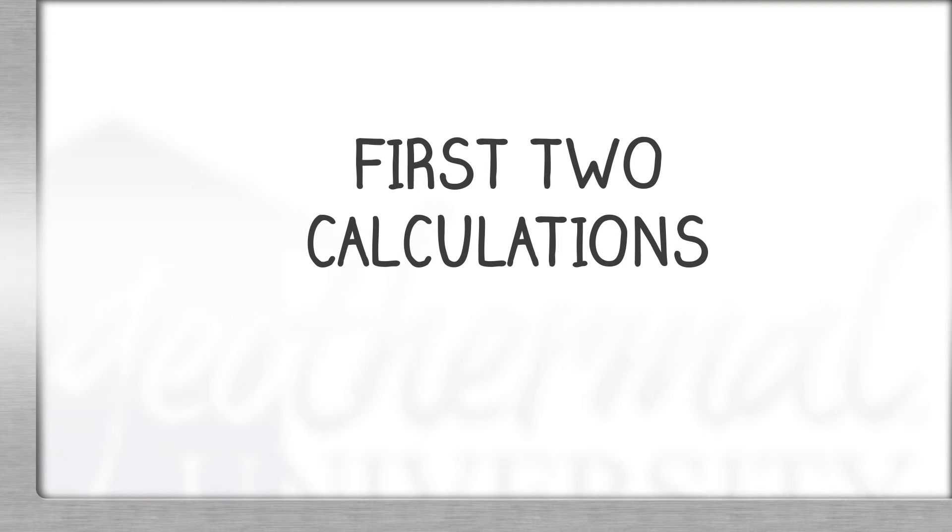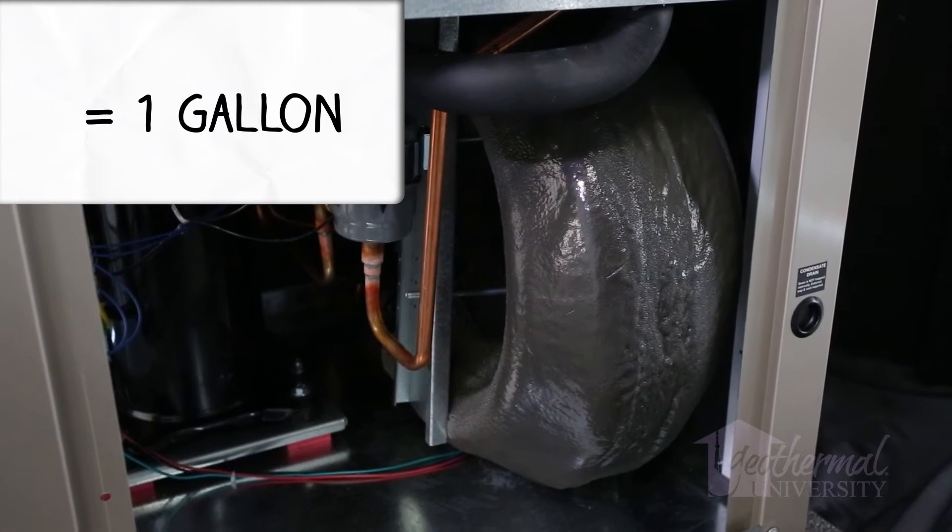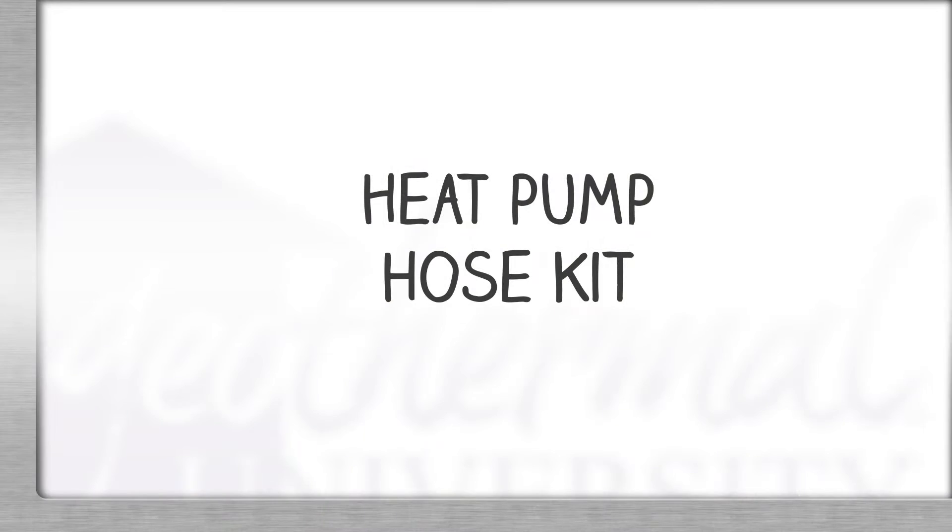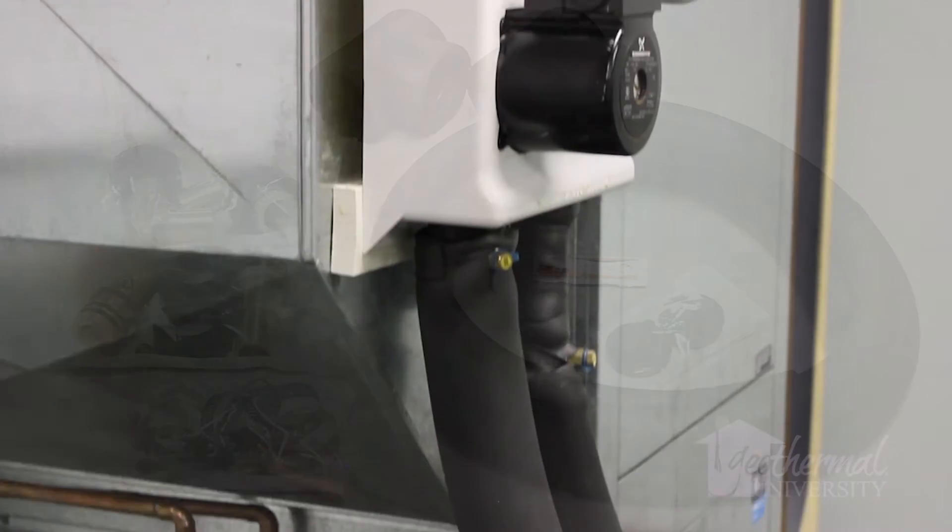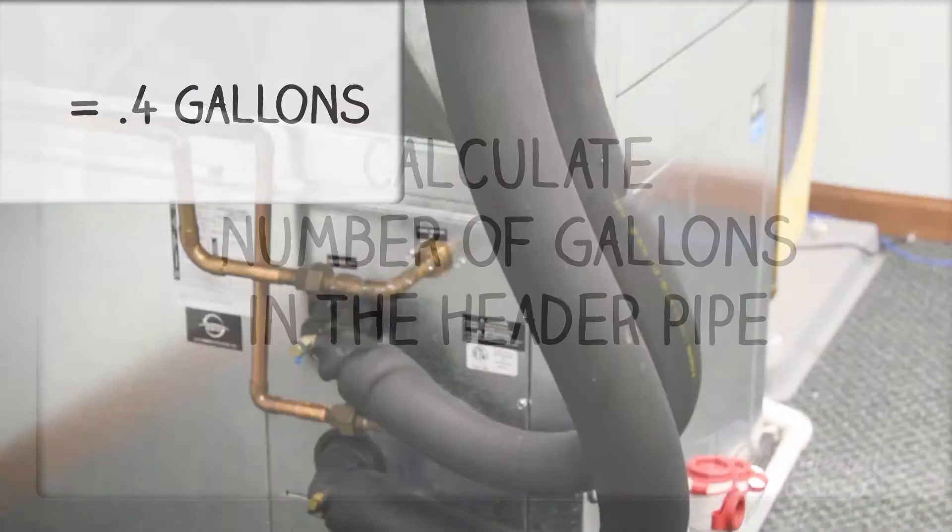Our first two calculations are very simple. In fact, not really calculations, more like standards. For the geothermal coax heat exchanger, use one gallon. Next, we'll allow for the hose kit. The hose kit should not exceed ten feet. A ten-foot hose kit contains four-tenths of a gallon.